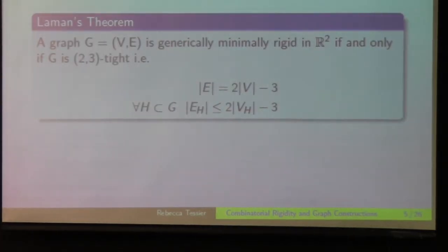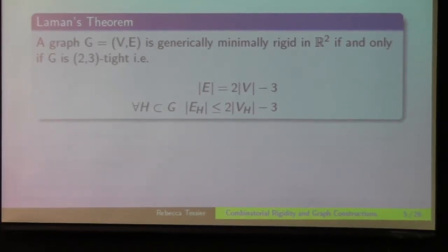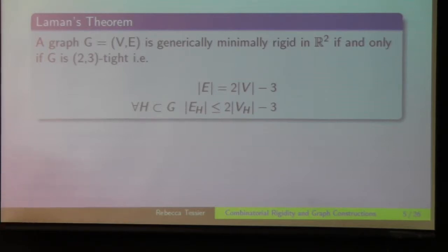So next I'm going to talk about Laman graphs, and this is one of the main motivating things for looking at this class of tight graphs and rigidity theory. Laman's theorem is that a graph is generically minimally rigid in R2 if and only if it's a 2-3-tight graph. So that means that the number of edges is equal to 2 times the number of vertices minus 3. And for all subgraphs, the number of edges is less than or equal to 2 times the number of vertices minus 3.